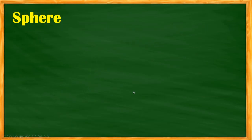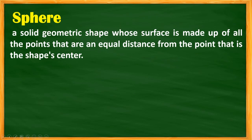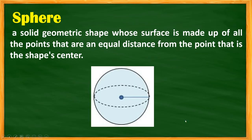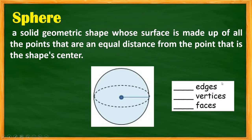Now let's look at the sphere. A sphere is a solid geometric shape whose surface is made up of all points that are equidistant from the center. The sphere has 0 edges, 0 vertices, and some books state that it has 12 faces.